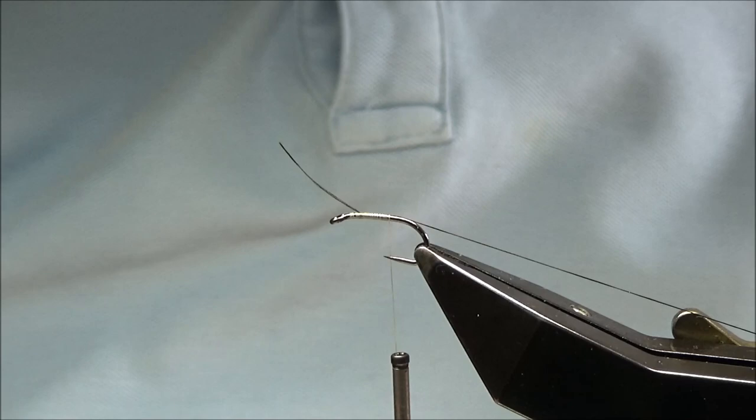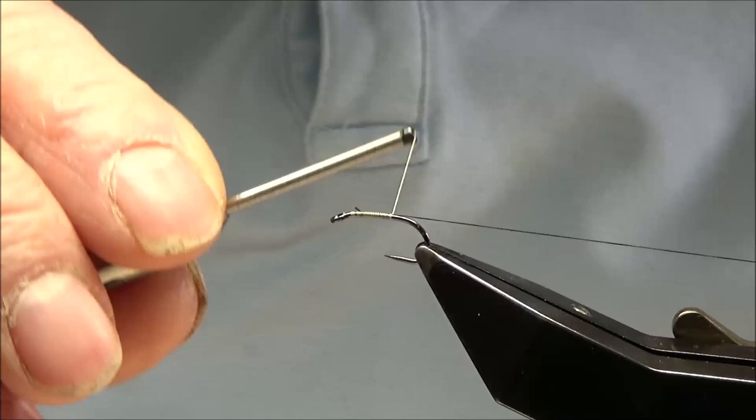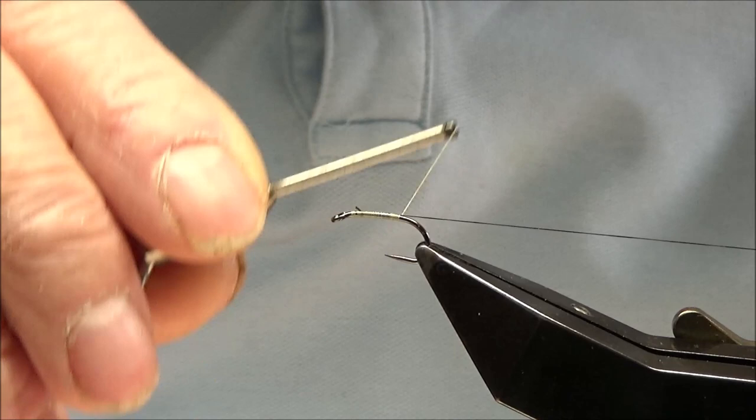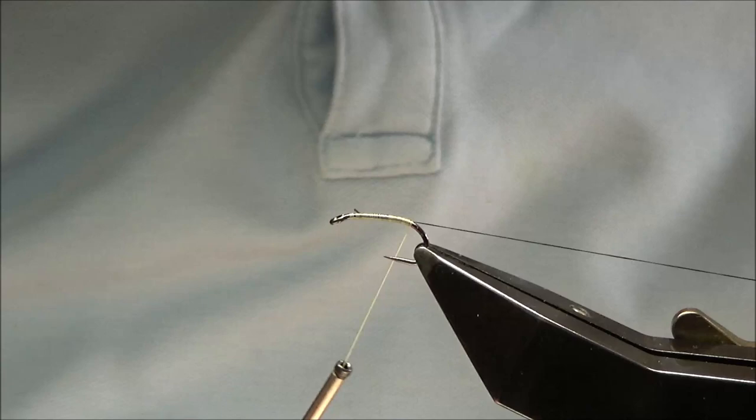If I'd tie these hooks for myself, I'd tie them short. I'd finish them there where you can see the thread. But these are for an order, so what's been asked for is to go round the bend. You can use a grub hook as well for this if you're going to go round the bend. You'll probably look better on a grub hook but that's not what's been ordered.